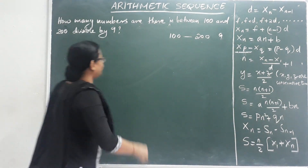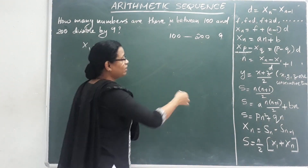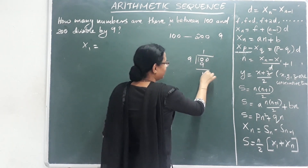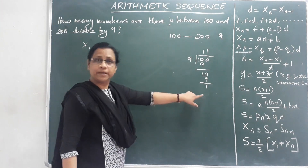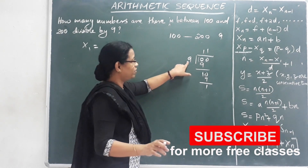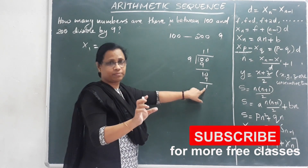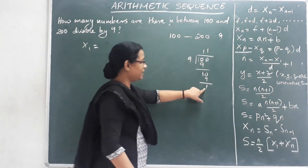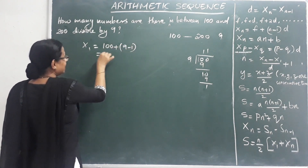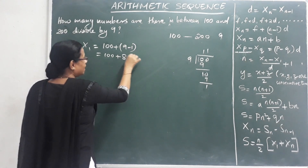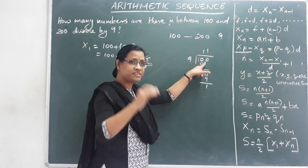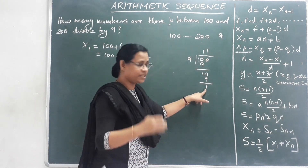We will find the first number, x1. We divide 100 by 9, then subtract the remainder from 9 and add to 100. That is 100 plus 9 minus 1, which is 100 plus 8, that is 108. So the first number divisible by 9 is 108.